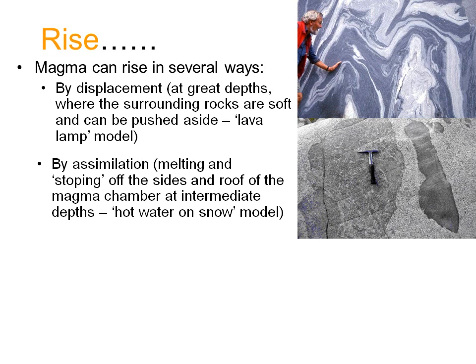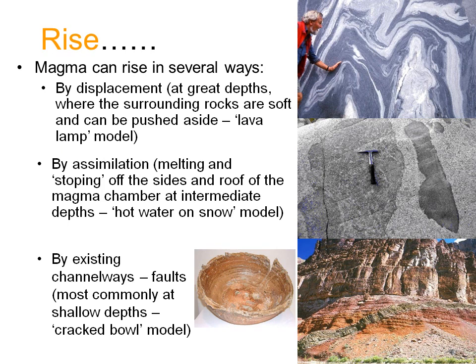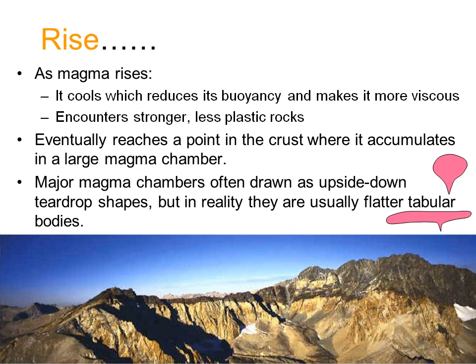If the rocks are too brittle to allow this, it can break off the rock above it and assimilate it so it becomes part of the melt again — rather like an ice cube floating in a beaker full of hot water. Finally, near the surface, where the rocks are too cold or too brittle to allow either of these methods, it relies on finding or forming fractures and then flowing up those, rather like water leaking out of a cracked bowl. But as the magma rises through increasingly cool rocks, it loses its own heat, which in turn causes it to lose its buoyancy and to become more viscous. Eventually it cannot rise any further and it accumulates in a large magma chamber where it starts to crystallize.